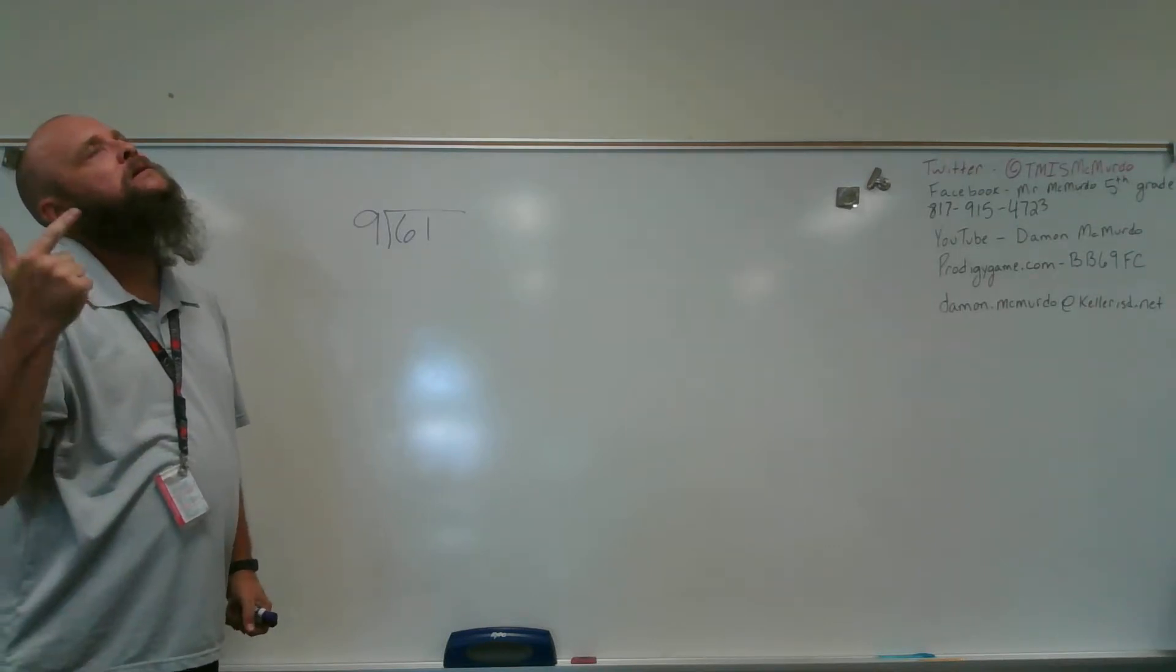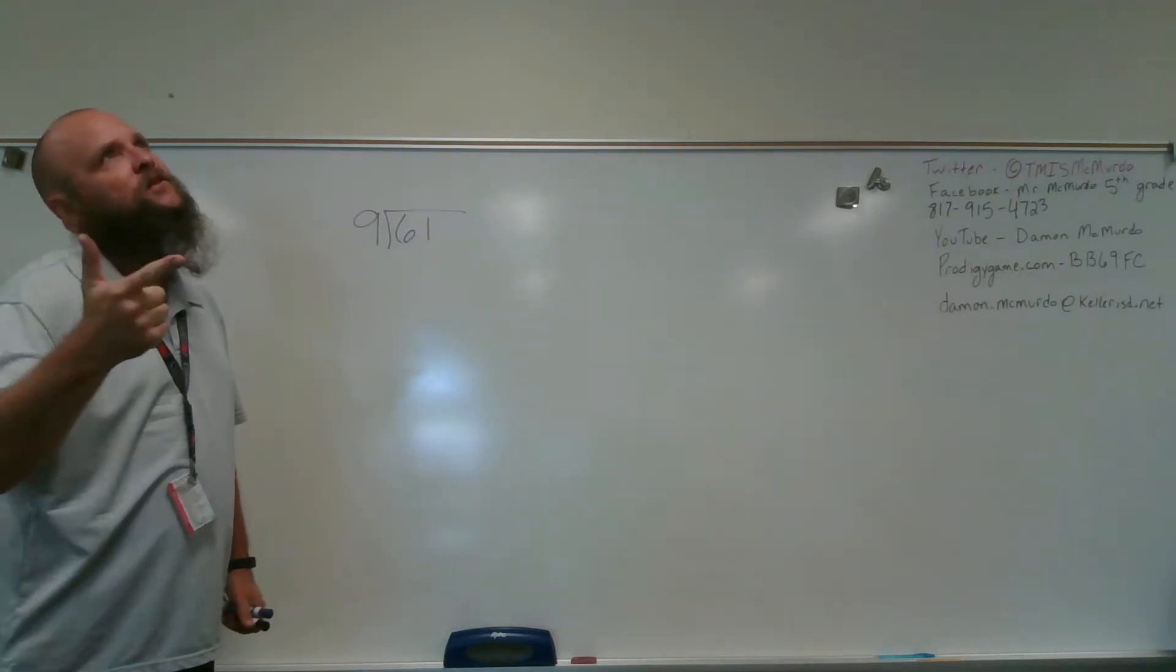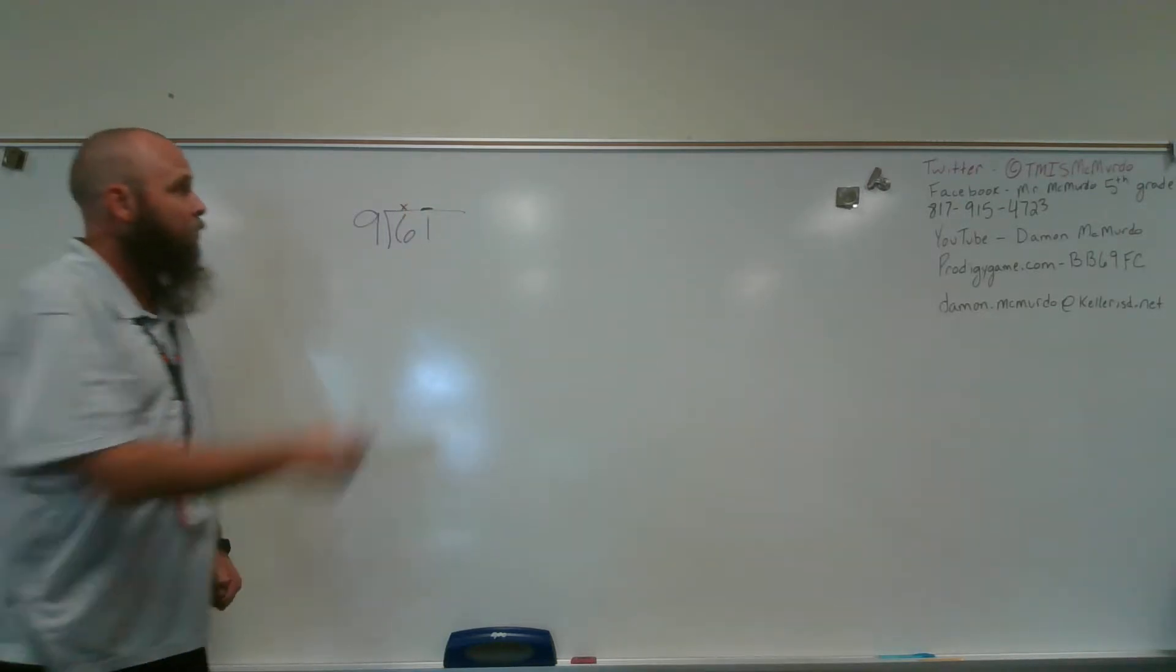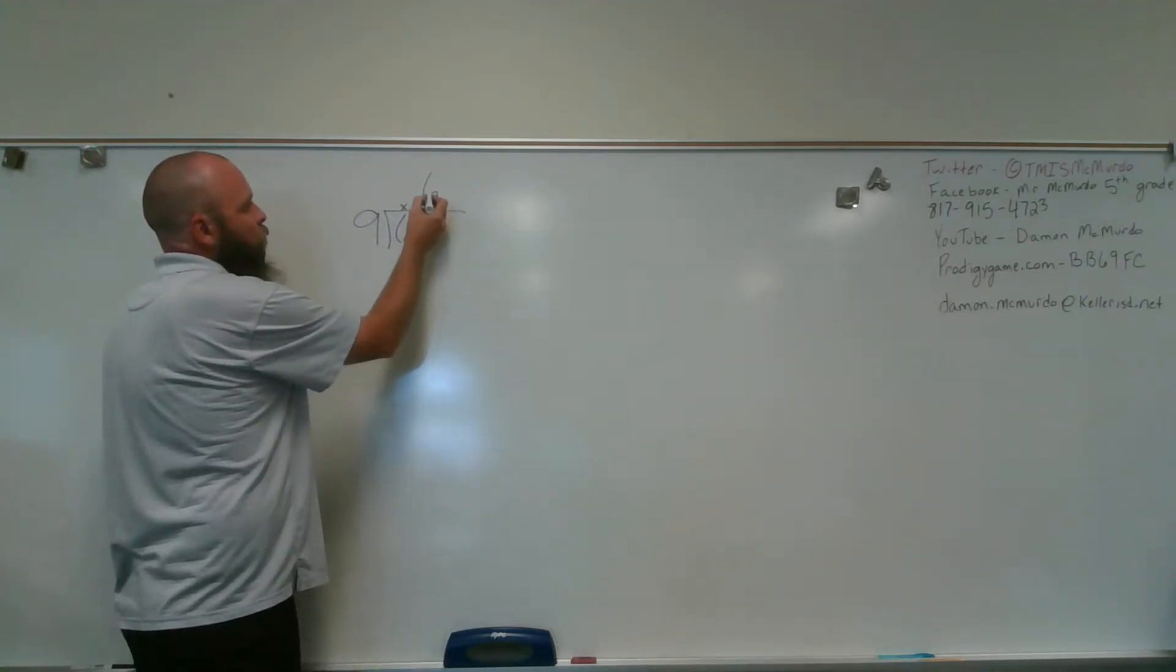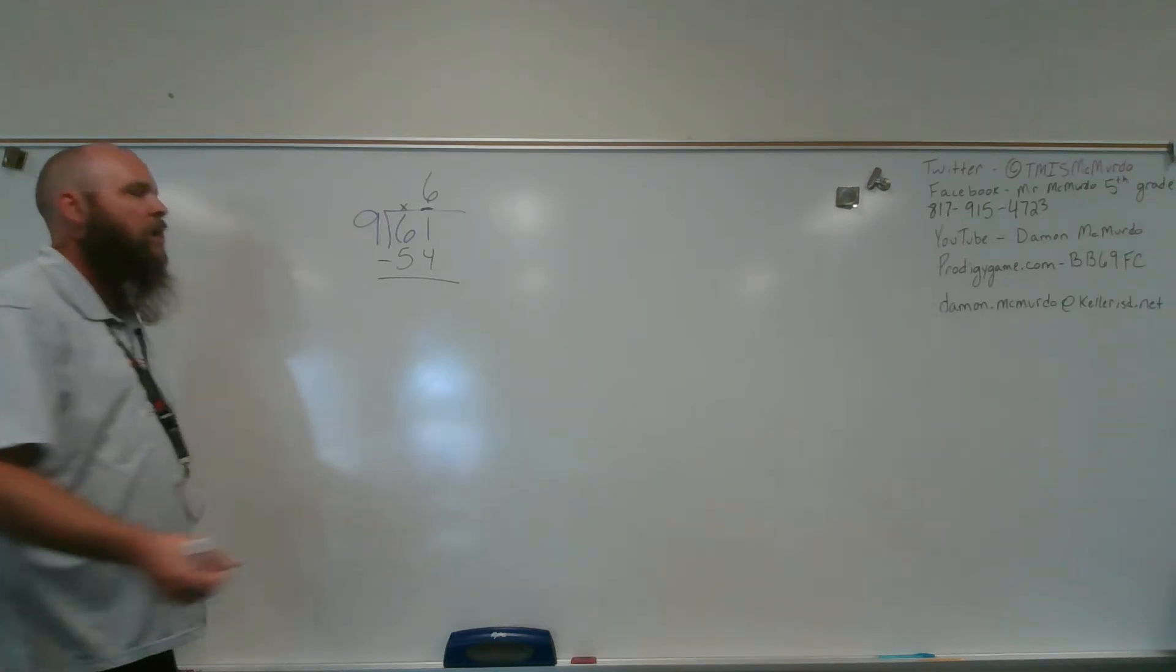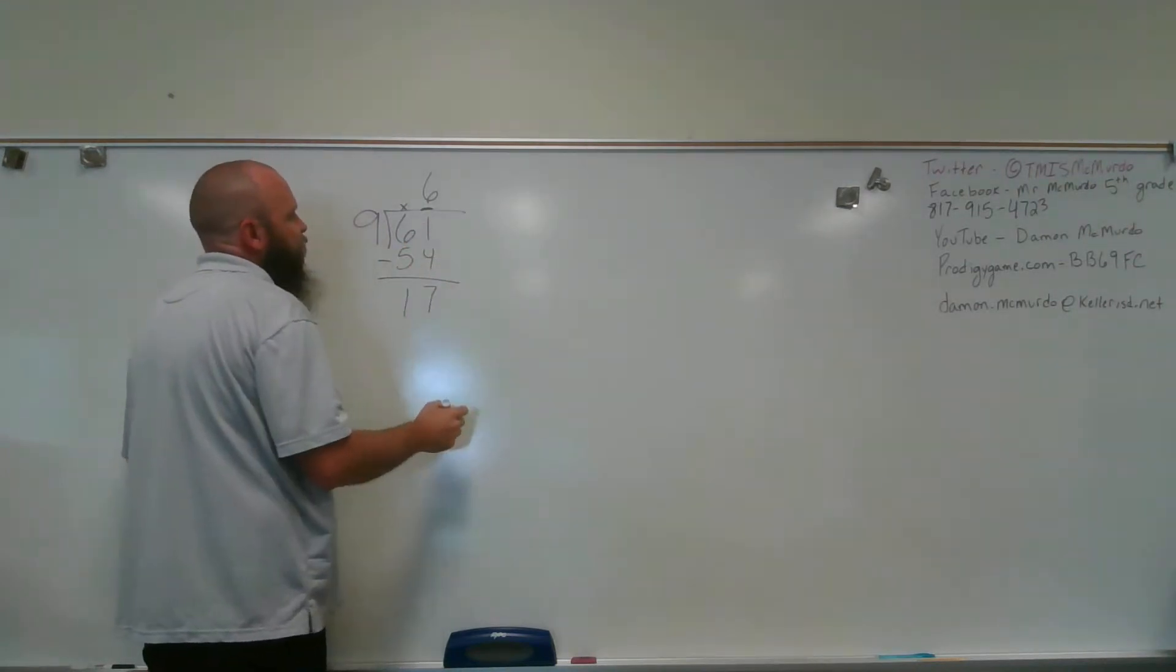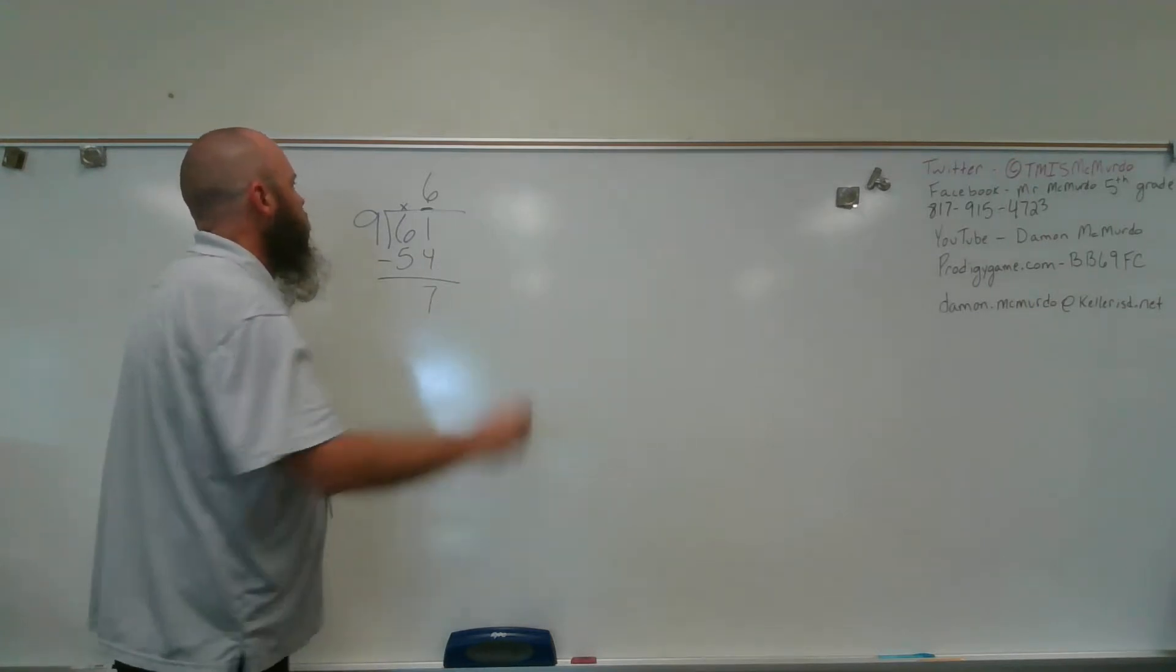And as close as I can get to 61 without going over is 9, 18, 27, 36, 45, 54, 63, oh, 63 is too big. 54, so it's times 6. 9 doesn't go into the 6. It goes over the 1. I'm only going to have a 1 digit in my quotient. 9 into 61, 6 times. Then I multiply 6 times 9 is 54. Then I subtract. 61 dollars. But I give you 54 dollars. That means you have 7 dollars left. So, with a remainder of 7.